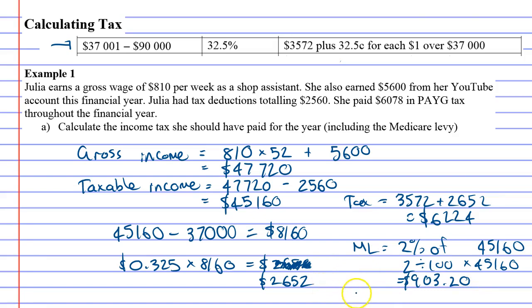So altogether she's going to have to pay six thousand two hundred and twenty-four plus the Medicare levy of nine hundred and three dollars twenty. Her total based on tax that she's going to pay is seven thousand one hundred and twenty-seven dollars and twenty cents. I'm going to stop here and do the rest of the example in another video.